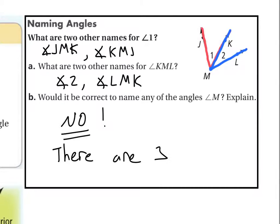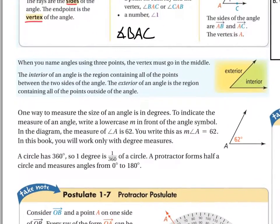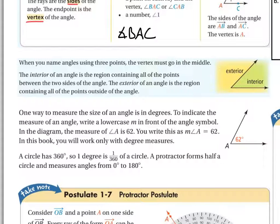Would it be correct to name any of these angles just angle M? No, because there are actually three angles with M as the vertex: the red one, the blue one, and angle J-M-L — the big one. Regarding interior and exterior of an angle: look at the diagram. Think of the angle like Pac-Man's mouth — if something is inside Pac-Man's mouth, that's the interior. Otherwise, it's the exterior.